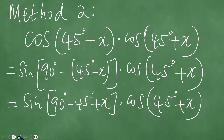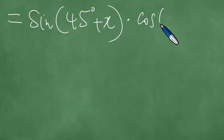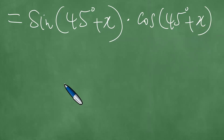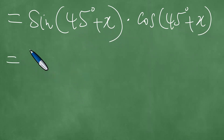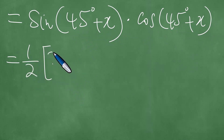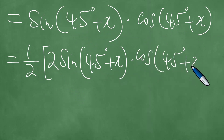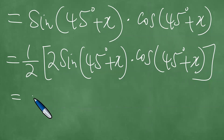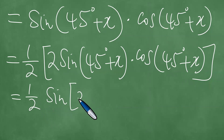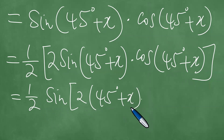The second part is the cosine of 45 degrees plus x. The two angles are the same — 45 degrees plus x and 45 degrees plus x — but the trigonometric functions are different. So we put here one half, and we have 2 into the trigonometric sine of 45 degrees plus x, times the cosine of 45 degrees plus x. Therefore this is one half of the trigonometric sine of 2 into 45 degrees plus x.